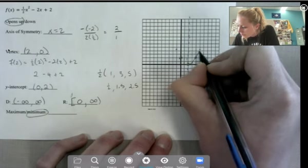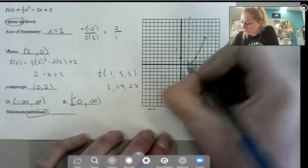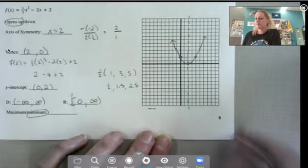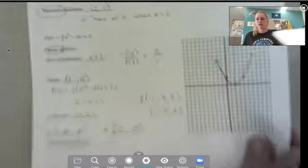So this one's a little bit fatter because that a is 1 half, so it's vertically compressing our graph.